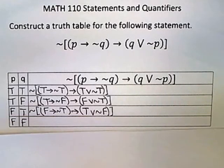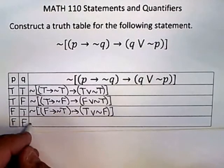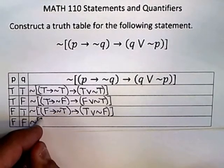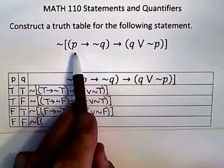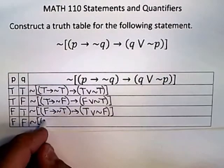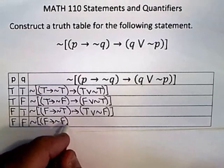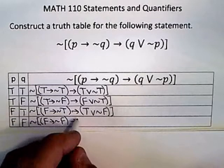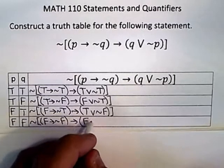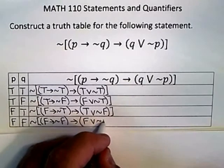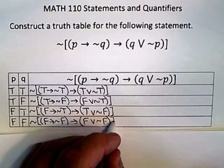And the last one. So the negation of, this time they're both false, so both P and Q get replaced with a capital F for false. Okay.